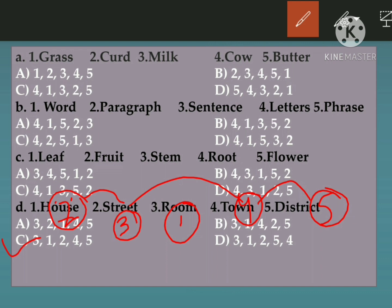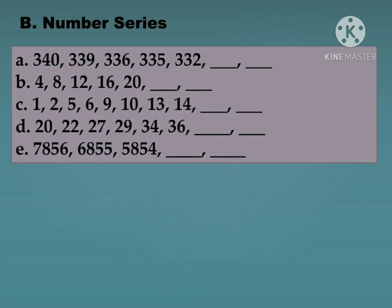Hope the logical sequence part is clear to you. Part B is number series — some series are given on your screen and you have to complete them. Part A series is: 340, 339, 336, 335, 332. You have to fill the next two. First, check what pattern the series is following — it is in decreasing order.